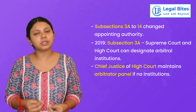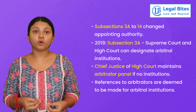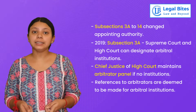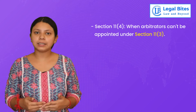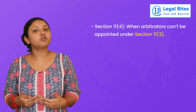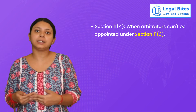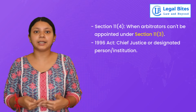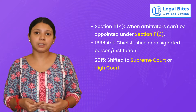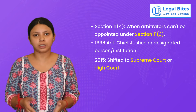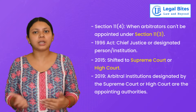Another example of change in appointing authority is subsection 4A, which talks about a situation where arbitrators are not appointed under subsection 3A — meaning either a party has not appointed an arbitrator within 30 days of a request to do so, or the chosen arbitrators have not appointed a presiding arbitrator within 30 days of appointment. In this case, the 1996 Act said that on request of a party, appointment would be done by the Chief Justice or any person or institution designated by him. In 2015, the amendment changed this so that appointment would be done by the Supreme Court or High Court. After 2019, it was provided that instead of the Supreme Court or High Court, this appointment would be done by the arbitral institutions designated by the Supreme Court or High Court.